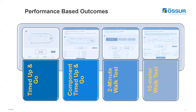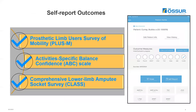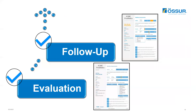To further verify that they have improved their functional capabilities, you can administer secondary performance-based outcome measures such as the Timed Up and Go, Component Timed Up and Go, 2-minute walk test, and 10-meter walk test. Or, what we highly recommend is to ask your patient to complete the PLAS-M and the ABC scale, and you're probably going to be very interested to see how they rate their socket satisfaction with the CLAS.